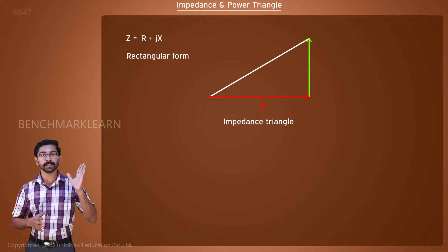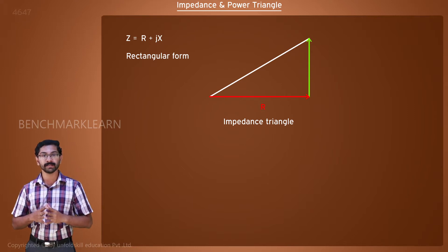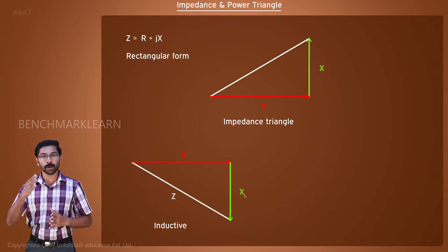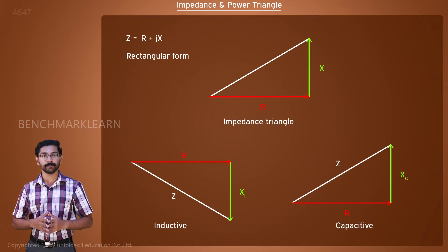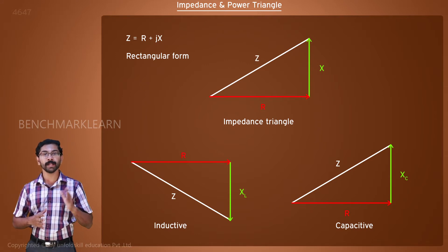The height edge which is perpendicular to the base represents the reactance. For inductive reactance, we drop the perpendicular down from the base, while for capacitive reactance, the perpendicular is drawn upwards. The hypotenuse of the triangle is the impedance of the load.